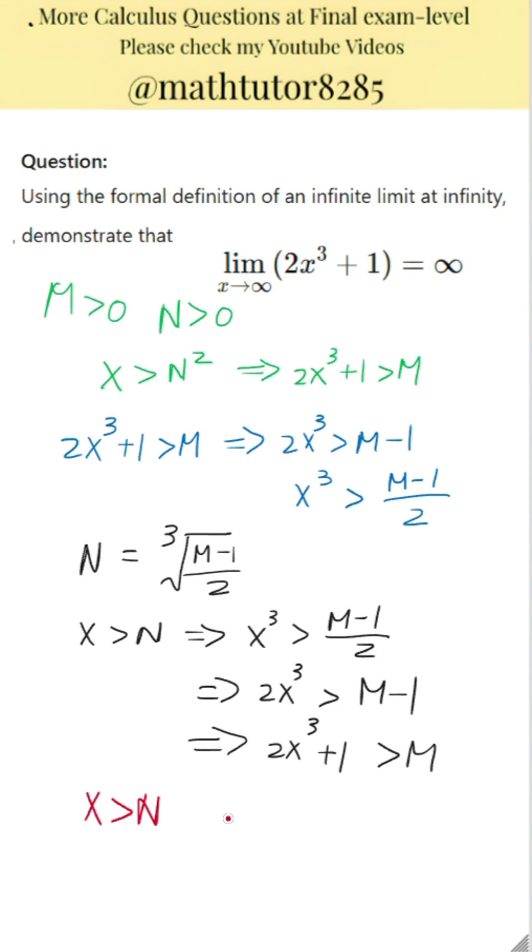Next step, for all x greater than N, the value of the function 2x cubed plus 1 is greater than M. This matches the formal definition of an infinite limit at infinity. So we conclude that the limit of 2x cubed plus 1 as x approaches infinity is infinity.